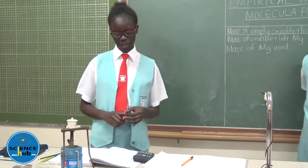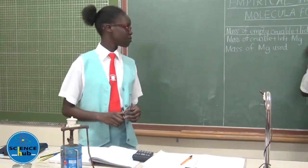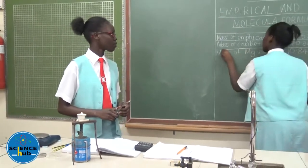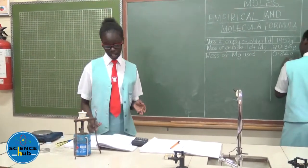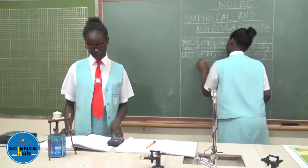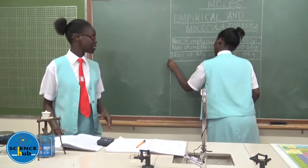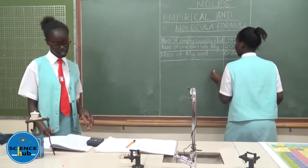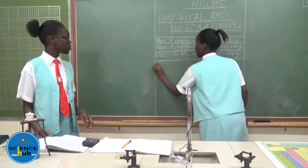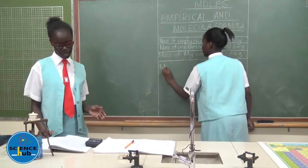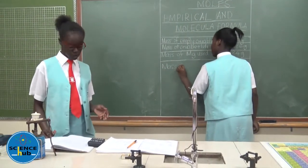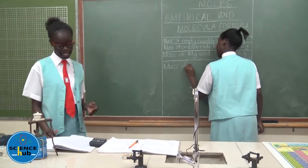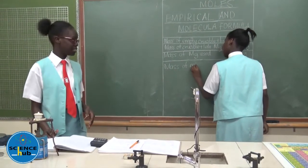In the meantime, she will continue filling up the data table. We will expect a white powder to be formed — that is magnesium oxide. We will then get the mass of magnesium oxide plus the crucible and the lid after heating.